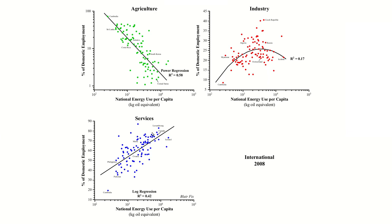The service sector does mean more energy use. Looking at international data — each dot a country — on the horizontal axis is national energy use per capita, and on the vertical axis is the size of the service sector. Cambodia uses very little energy and has a tiny service sector at around 20% of employment. Moving up to Canada and Iceland — Iceland uses a huge amount of energy — you get a very large service sector: 70-90% of the population in services. The same trend is true for all countries.